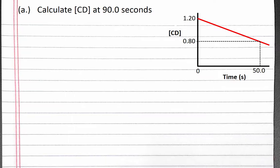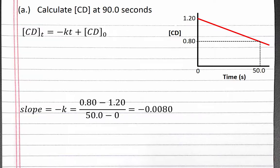According to our integrated rate law for a zero-order reaction, the concentration of CD at time T equals negative rate constant times time plus the initial concentration of CD. We can calculate our slope from the graph, which is equal to negative K. The slope is 0.8 subtract 1.2, which is our rise, divided by 50 subtract 0, which is our run. Completing the calculation, we get negative 0.0080. The initial concentration of CD is equal to the y-intercept, which is 1.2.